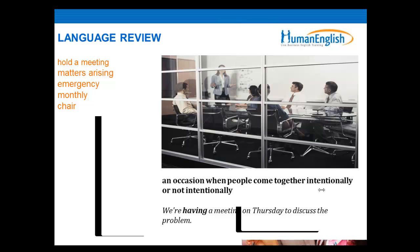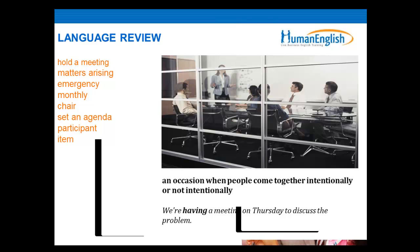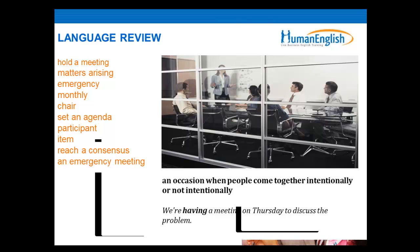To chair a meeting is to lead a meeting, and it's usually done by the chairman or the chairperson. You can also say it's to be the head of the meeting. It's also very important to set an agenda — an agenda is the written list of points to be discussed. The participants are the people who come to the meeting. An item is the points or issues on the agenda, and to reach a consensus is to reach a decision in the meeting. Sometimes we hold an emergency meeting if something is urgent.